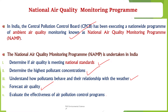The fifth objective is to evaluate the effectiveness of air pollution control programs. The data gathered through NAMP is used to evaluate the effectiveness of existing air pollution control measures and programs. This helps in understanding whether current strategies are working or if there is a need for new or improved interventions.